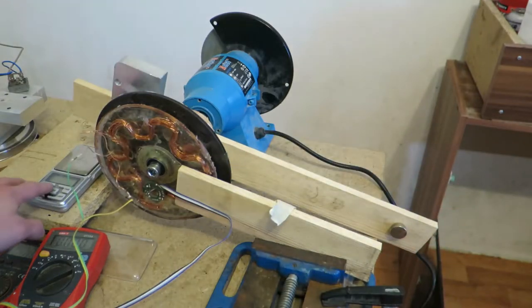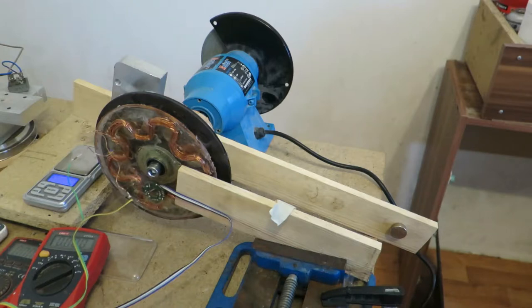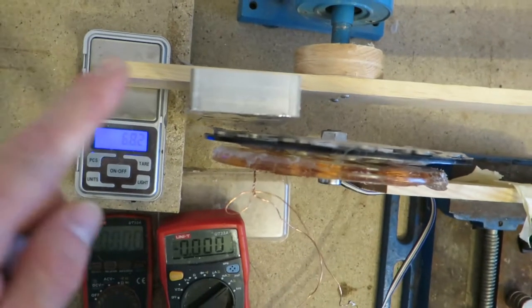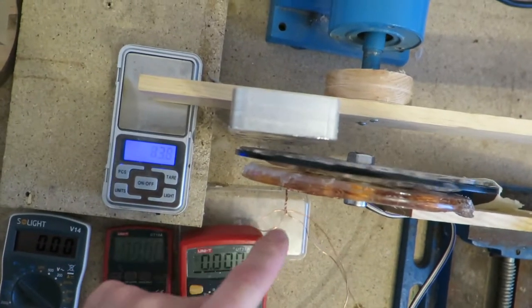I mounted a wooden arm on a grinder. On the long side of the wooden arm there's a counterweight, and on the short side there's a solid piece of aluminum.